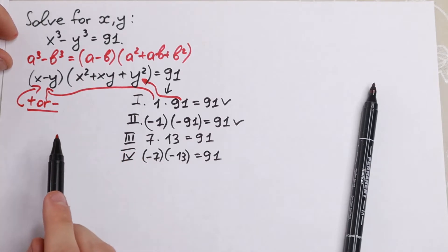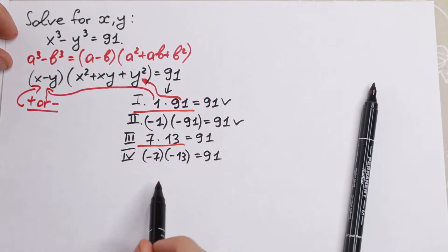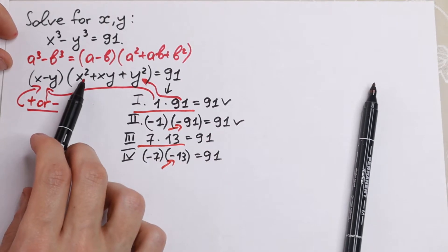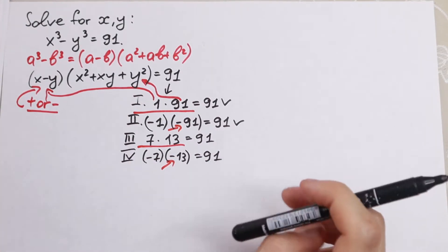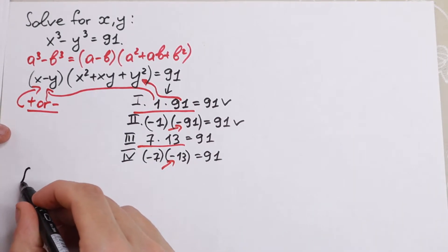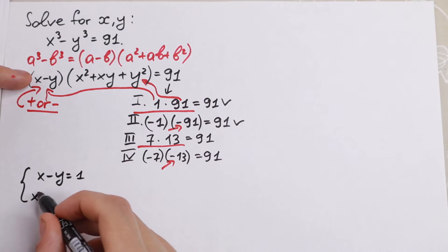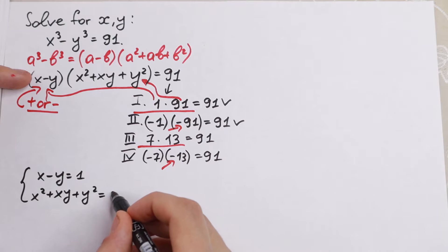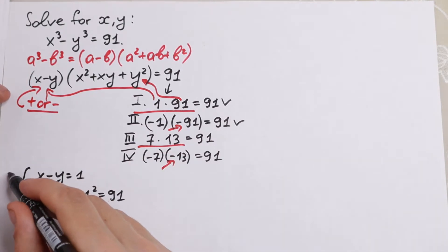So we have only two valid cases. The first system is: x minus y equals 1, and x squared plus xy plus y squared equals 91.